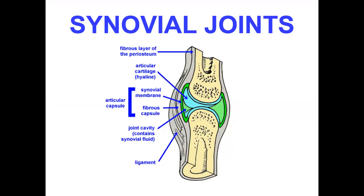Joints are classified into two types: one is the solid, non-synovial joints, and the other is the cavitated joints, that is synovial joints. We will go to the synovial joints. This diagram shows the normal components of the synovial joint. There is a synovial membrane which lines the synovial cavity, then a fibrous layer of periosteum, the articular cartilage, the fibrous capsule, and the joint cavity which contains synovial fluid, along with different ligaments which anchor the joint.